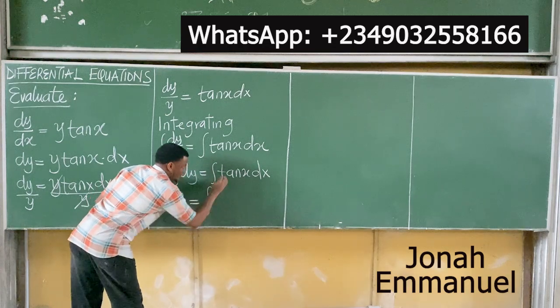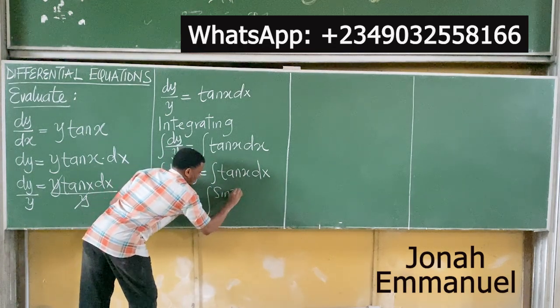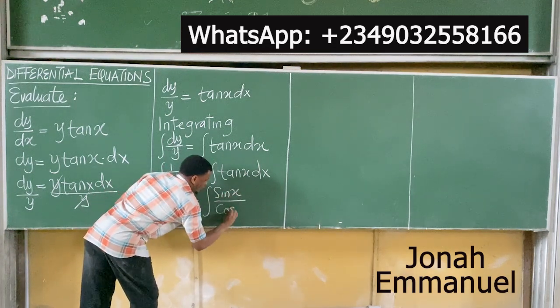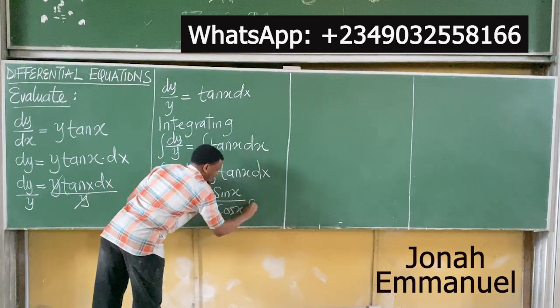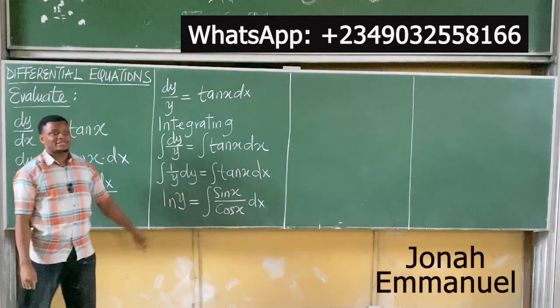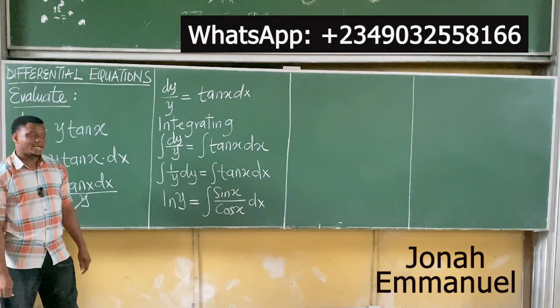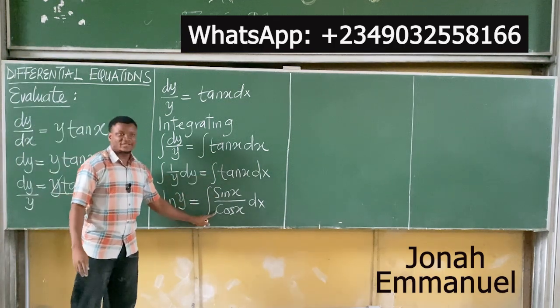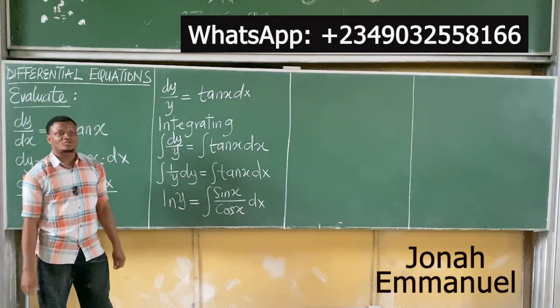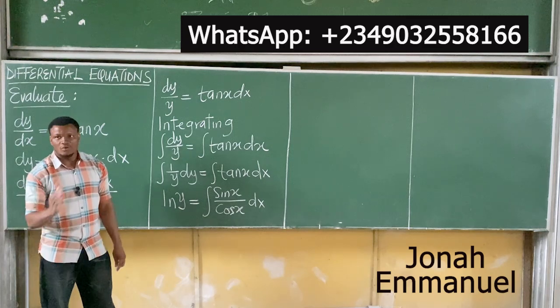So this becomes integral of tan(x), which becomes sin(x)/cos(x). That's the approach you give to it. tan(x) is equal to sin(x)/cos(x). You bring in that trig identity, then you run with it.